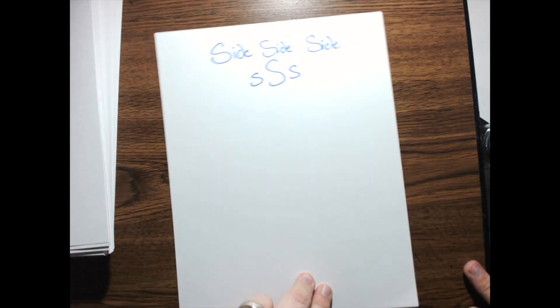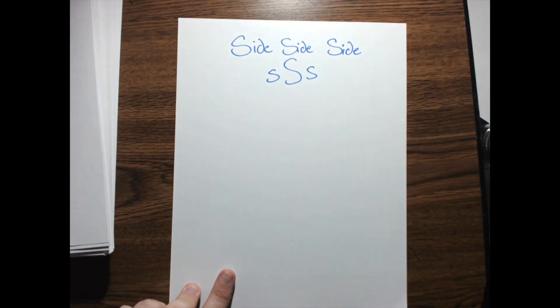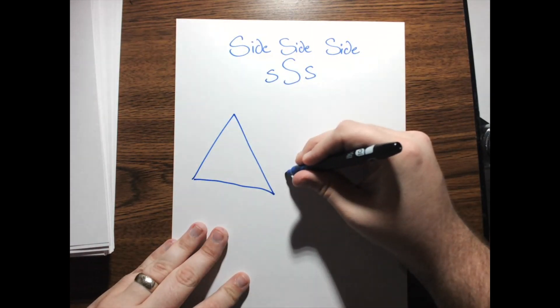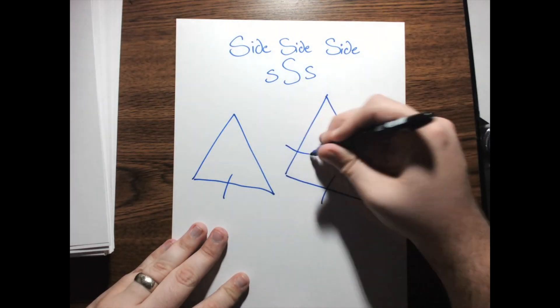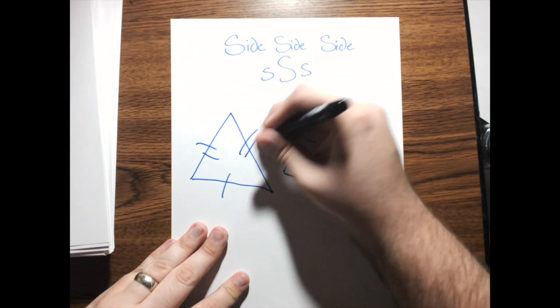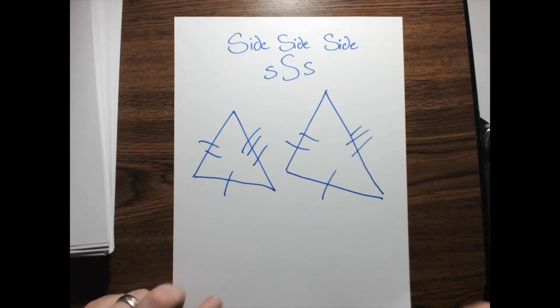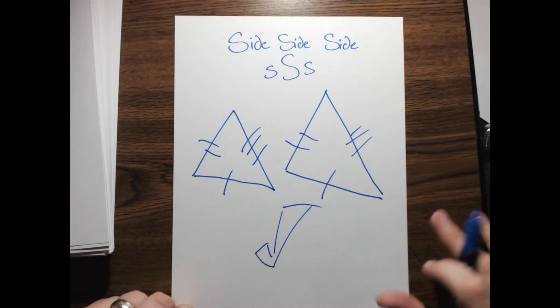Alright. So, our first triangle congruence theorem that we're going to learn about is this one right here, known as side, side, side, or triple S. Basically, if I have two triangles and I know that their corresponding sides are congruent, then if all three sides are congruent and they are two triangles, then they are congruent triangles. Yay! That's our first one.